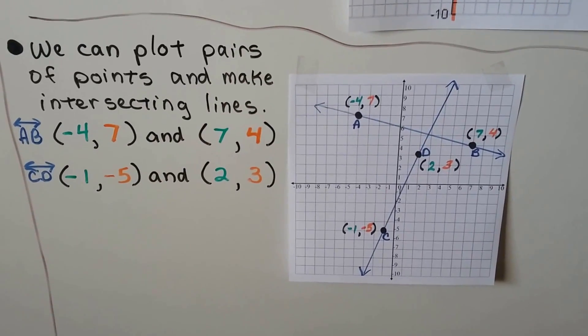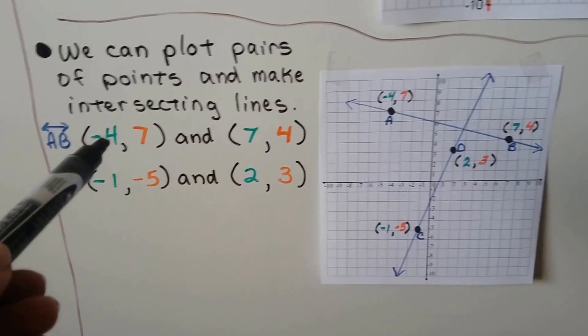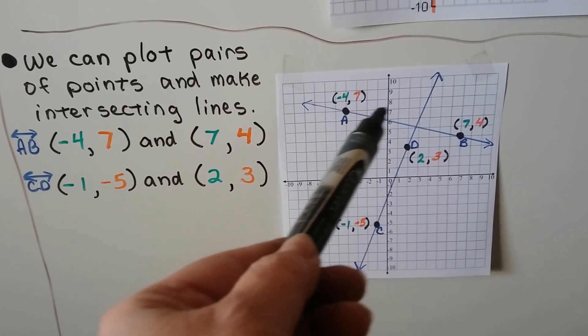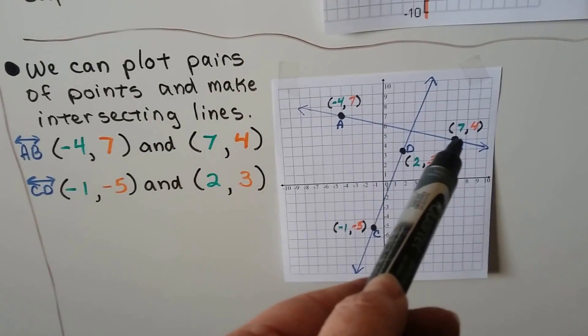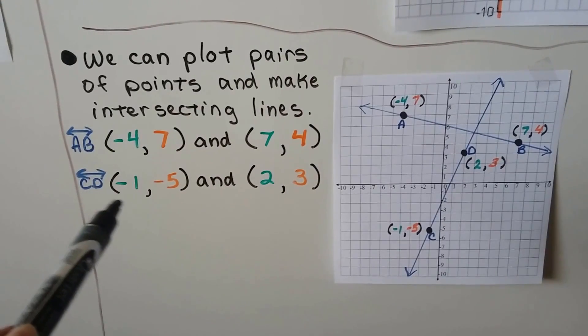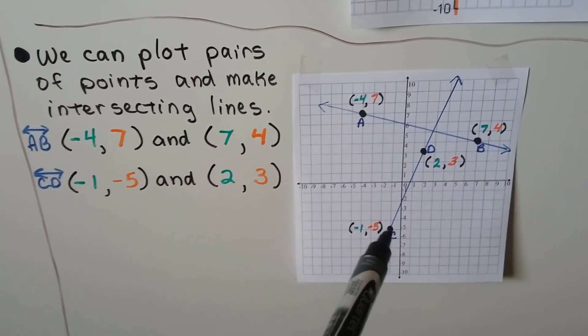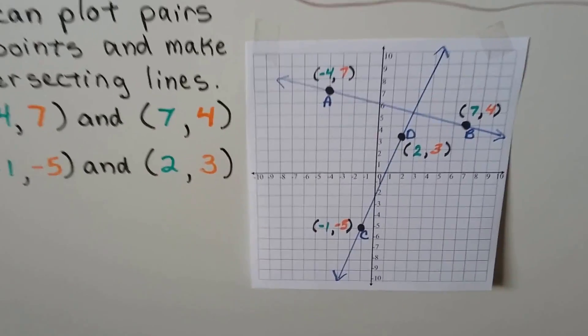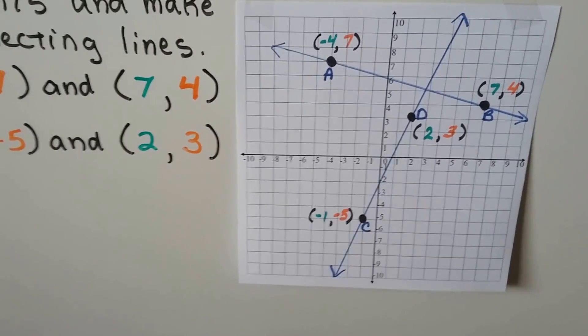We can also plot pairs of points and make intersecting lines. So if you see AB with this line with arrows going each direction, that means line AB. We can plot negative 4 and 7, and 7 and positive 4. Here's negative 4 and 7, it's negative 4 on the x, 7 on the y. And 7 and 4 would be a positive 7 and a positive 4. We can draw a line going through it, put arrows on each side. We can find line CD at negative 1 and negative 5. And 2 and 3. Here's a 2 on the x and a 3 on the y, that's point D. We can draw a line through them and see where they intersect right there.